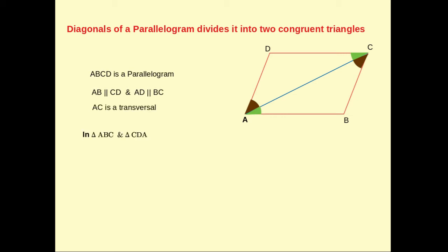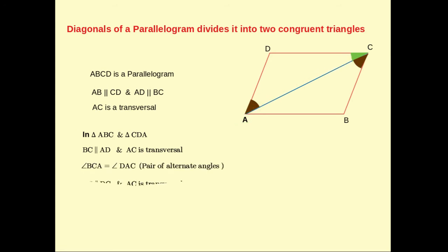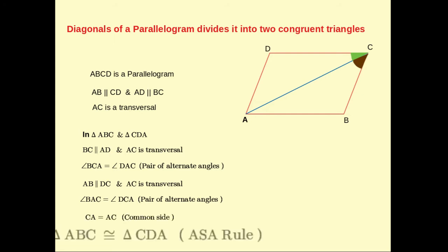In triangle ABC and triangle CDA: BC is parallel to AD and AC is a transversal, so angle BCA is equal to angle DAC as alternate angles. AB is parallel to DC, so angle BAC is equal to angle DCA as alternate angles. CA is equal to AC as a common side. Therefore, triangle ABC is congruent to triangle CDA according to the ASA rule.